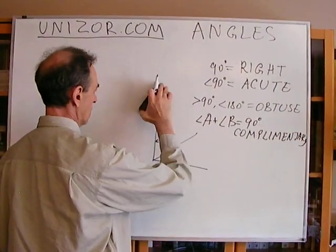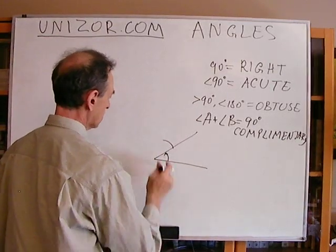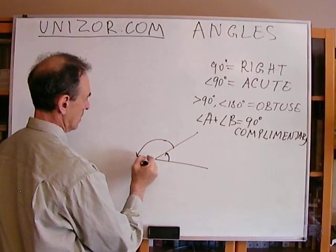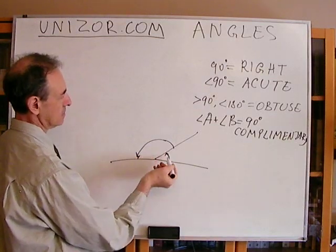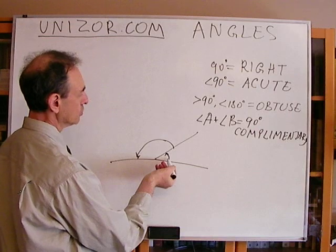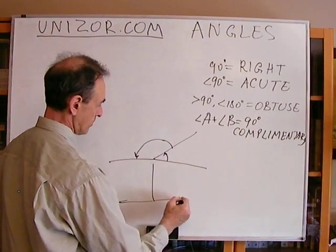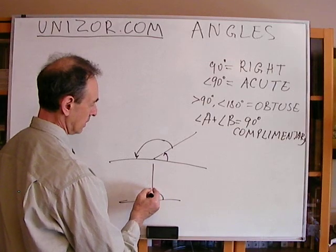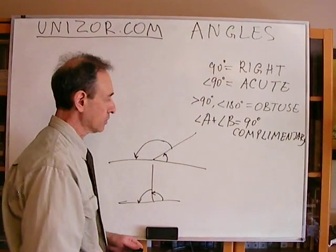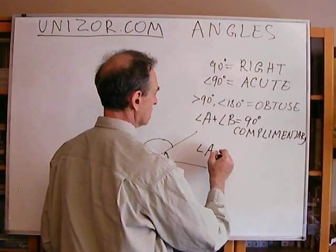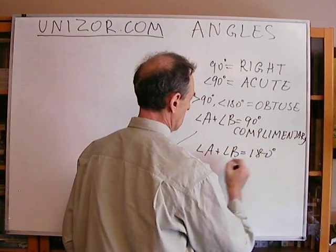If two angles make 180 degrees, this one and this one. One is, let's say, acute angle and another obtuse. Or, if you wish, which is the same thing. One is the right angle and another is the right angle. Both together, they still make 180. So these two angles are called supplementary.